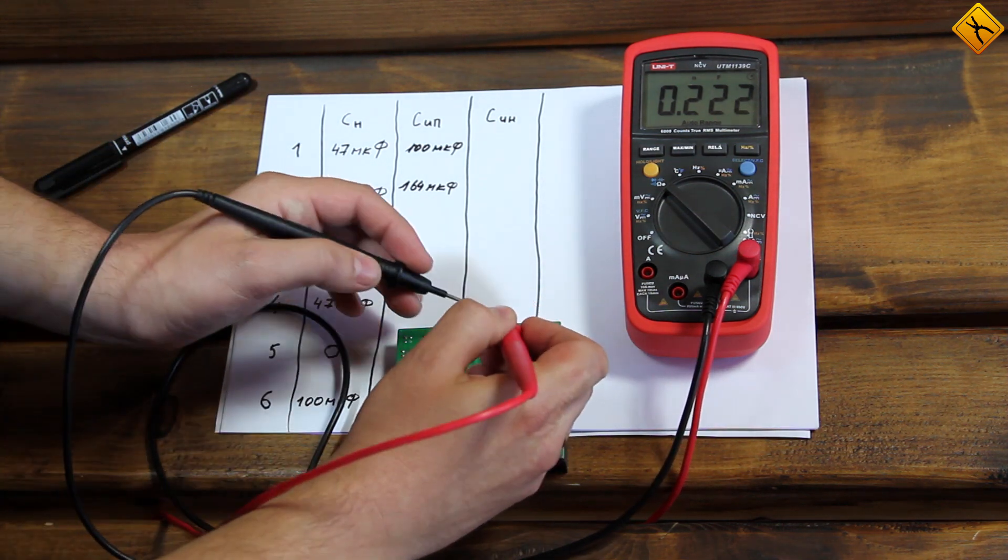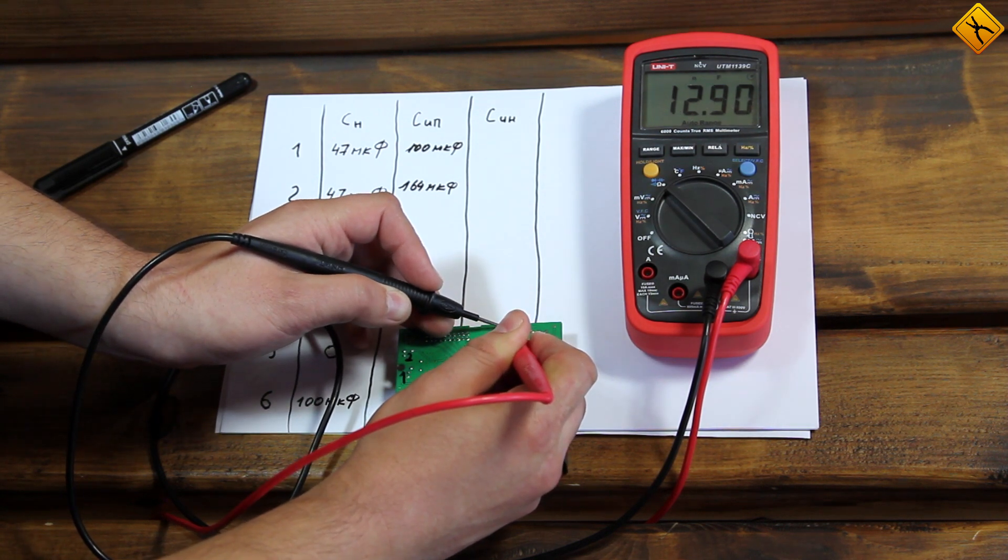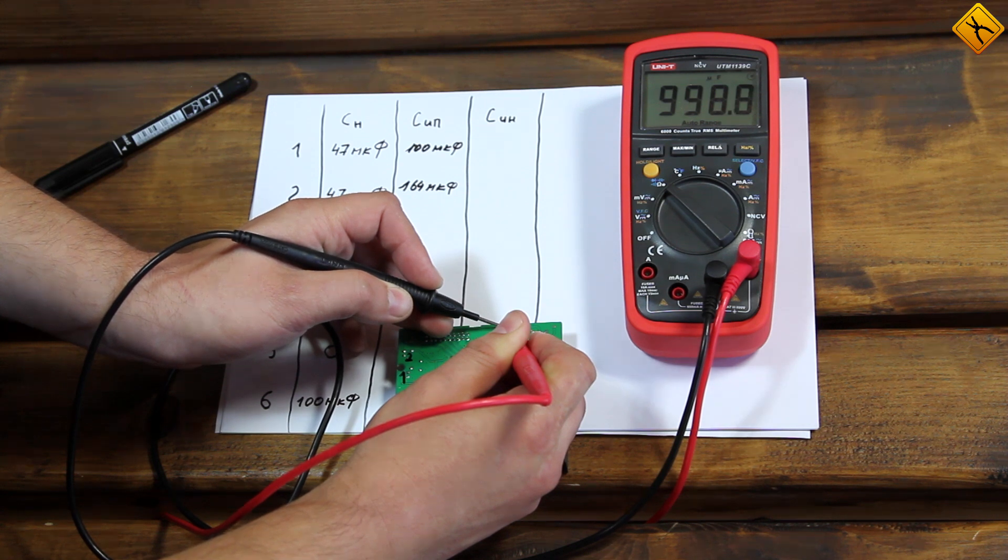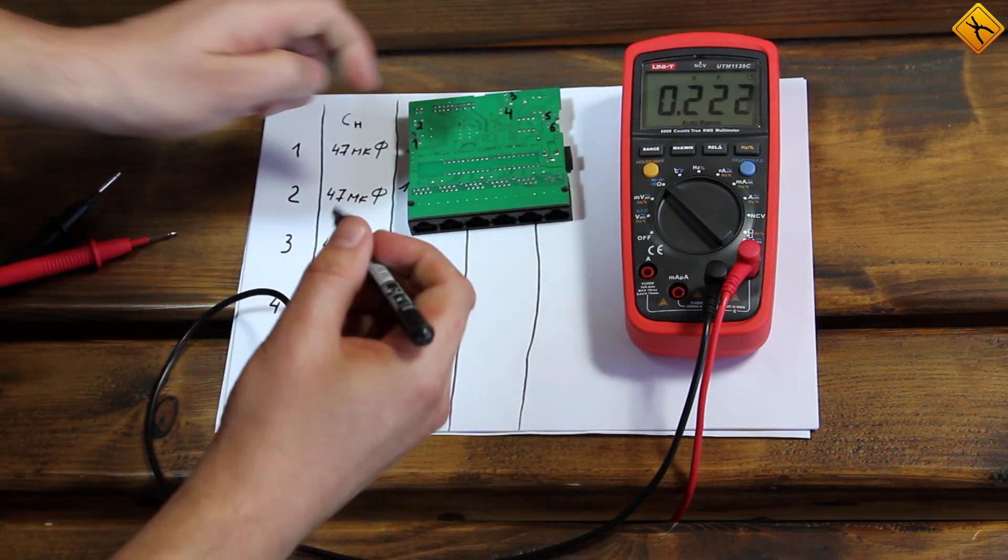In point three, we should have 470 microfarads. However, we get almost one millifarad. This is two times as high. Let's record this.